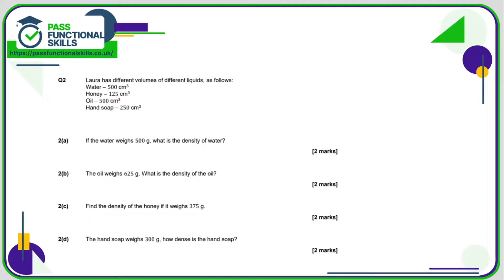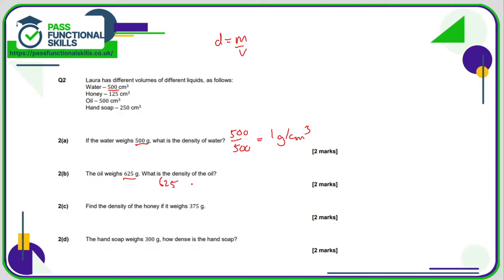Question number two. Laura has different volumes of different liquids: water, honey, oil, and hand soap. Water has a mass of 500 and a volume of 500, so the density is 500 divided by 500, giving 1 gram per cubic centimetre. The density of the oil is 625 divided by 500, which is 1.25 grams per cubic centimetre.